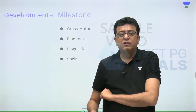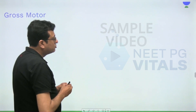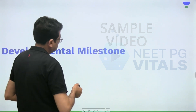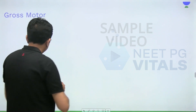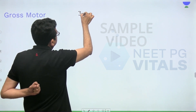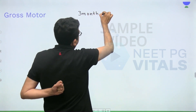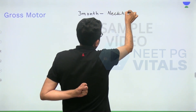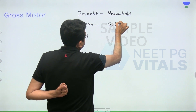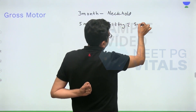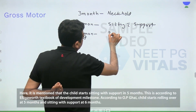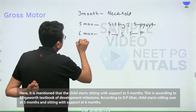Let's start with gross motor milestones. At three months, the child achieves neck holding. At five months, sitting with support. At six months, prone to supine and supine to prone rolling.